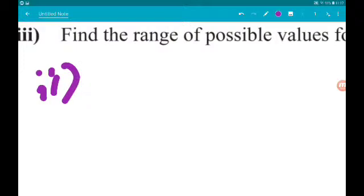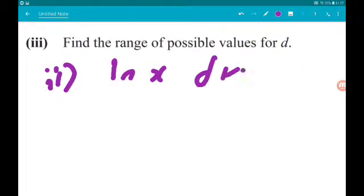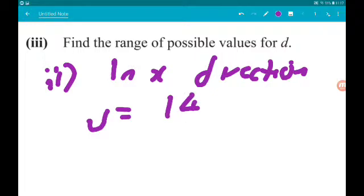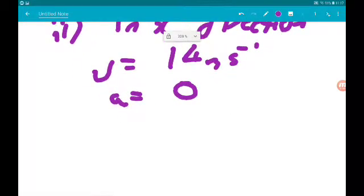So in the x direction, we know that u is 14 meters per second. Now there's no acceleration in the x direction, so a is equal to 0. So in x, s again is ut plus half a t squared, so we're just going to get ut. So here u is 14, so 14t. That means that x is 14t.